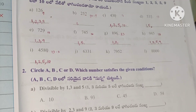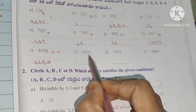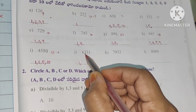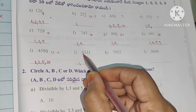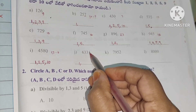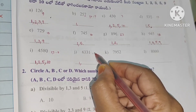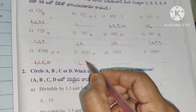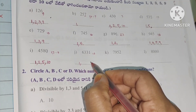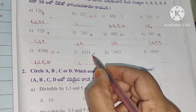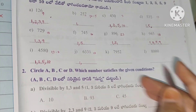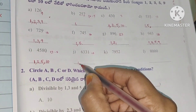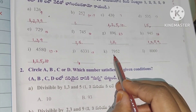Next number: divisible by 1. Digital root: 6 plus 3 is 9, 9 plus 1 is 10, 10 plus 3 is 13. 13 is a prime number, so not divisible by 3. Not divisible by 5 or 9 or 10. It is only divisible by 1.